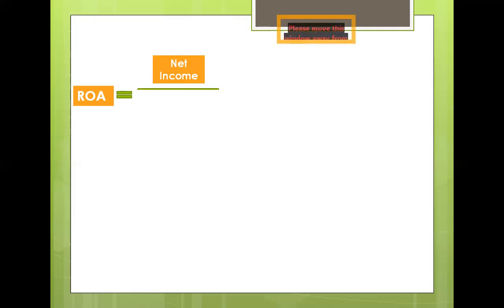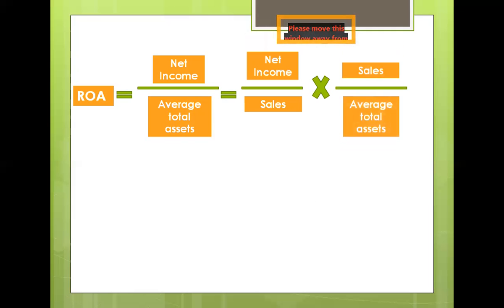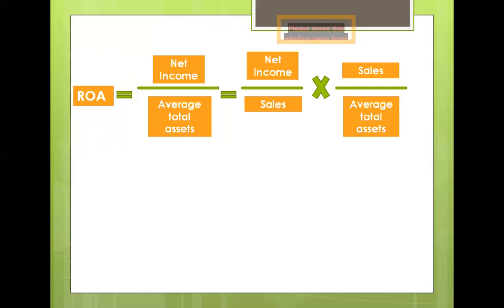The profit margin and asset turnover relate to the company's operations and combined yield return on assets. Return on assets or ROA is equal to net income divided by average total assets, which equals net income divided by sales times sales divided by average total assets. Return on assets measures the return on investment for the company without regard to how it is financed — the relative proportion of debt and equity in its capital structure.